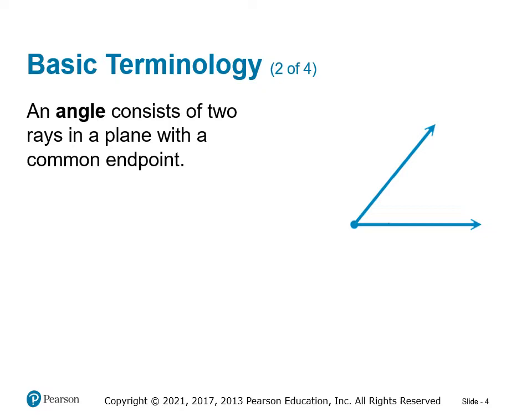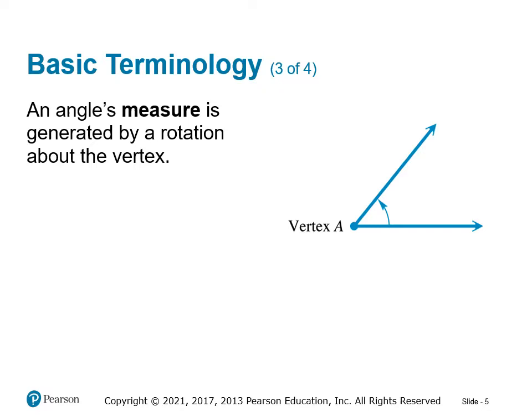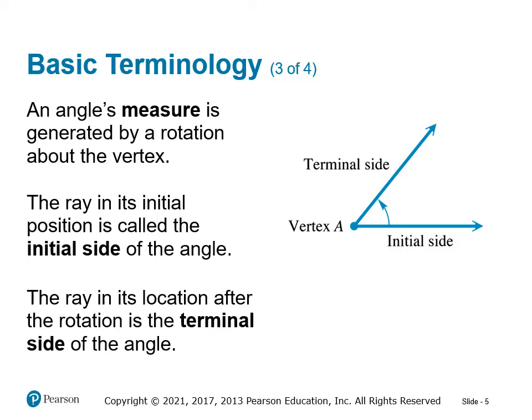An angle consists of two rays in a plane that have a common endpoint, as you can see in the image here. The two rays are the sides of the angle, and the common endpoint is called the vertex of the angle. An angle's measure is generated by a rotation about the vertex. The ray in its initial position is called the initial side, and the ray in its location after the rotation is the terminal side.